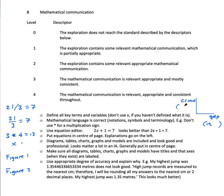Last one: use appropriate degree of accuracy and explain why. Example: my highest jump was 1.3544633665334 meters does not look good. High jump records are measured to the nearest centimeter, therefore I will be rounding all my answers to the nearest centimeter or two decimal places. My highest jump was 1.35 meters—that looks much better.